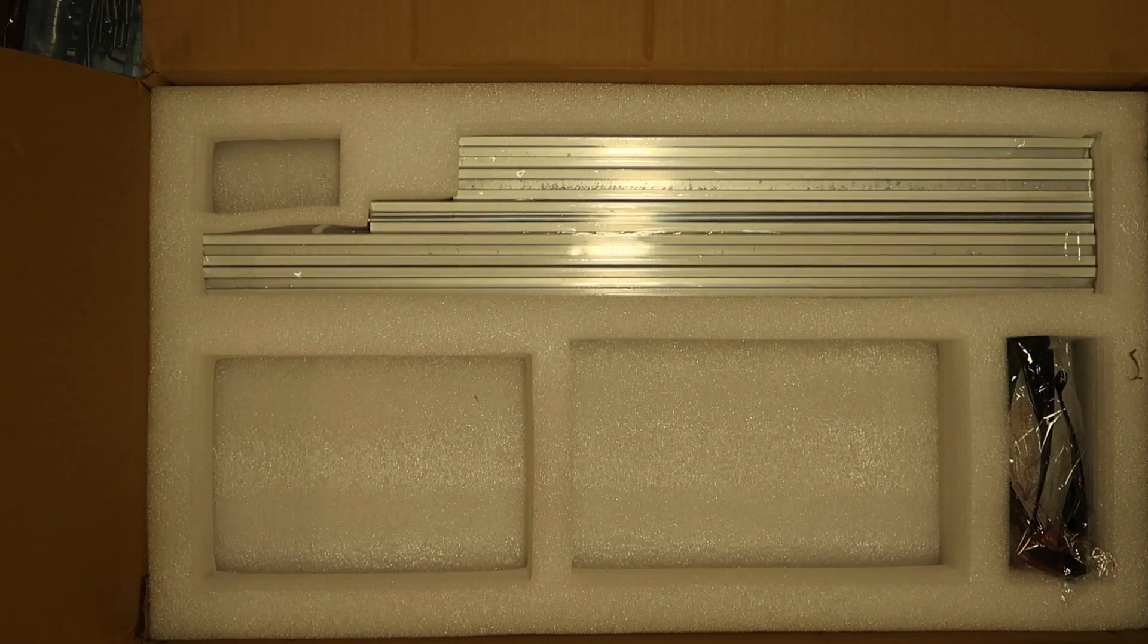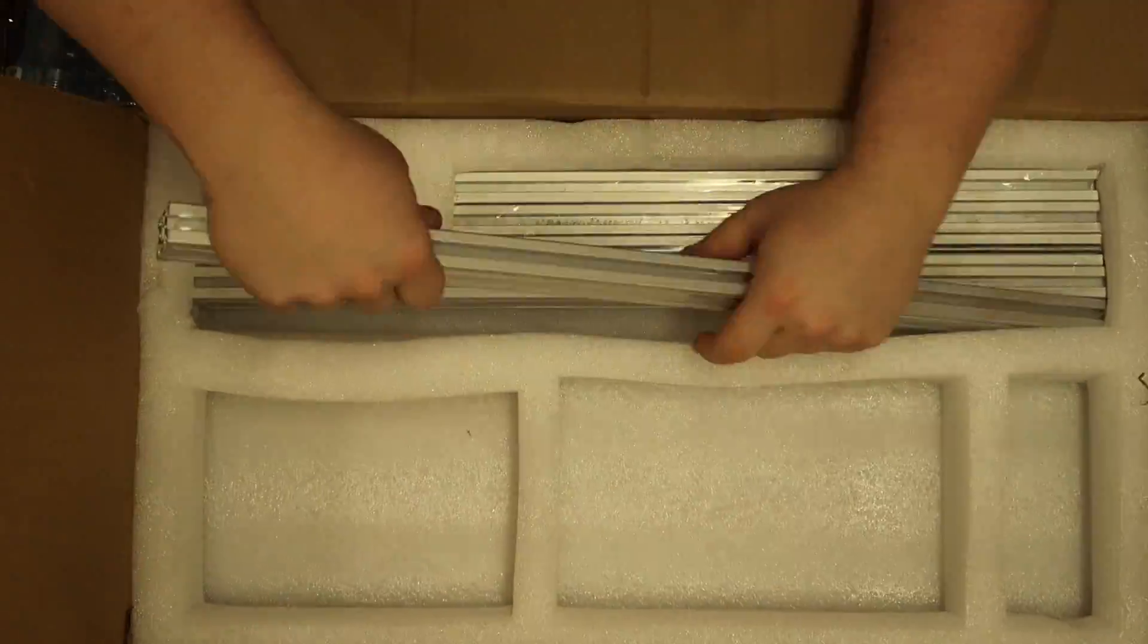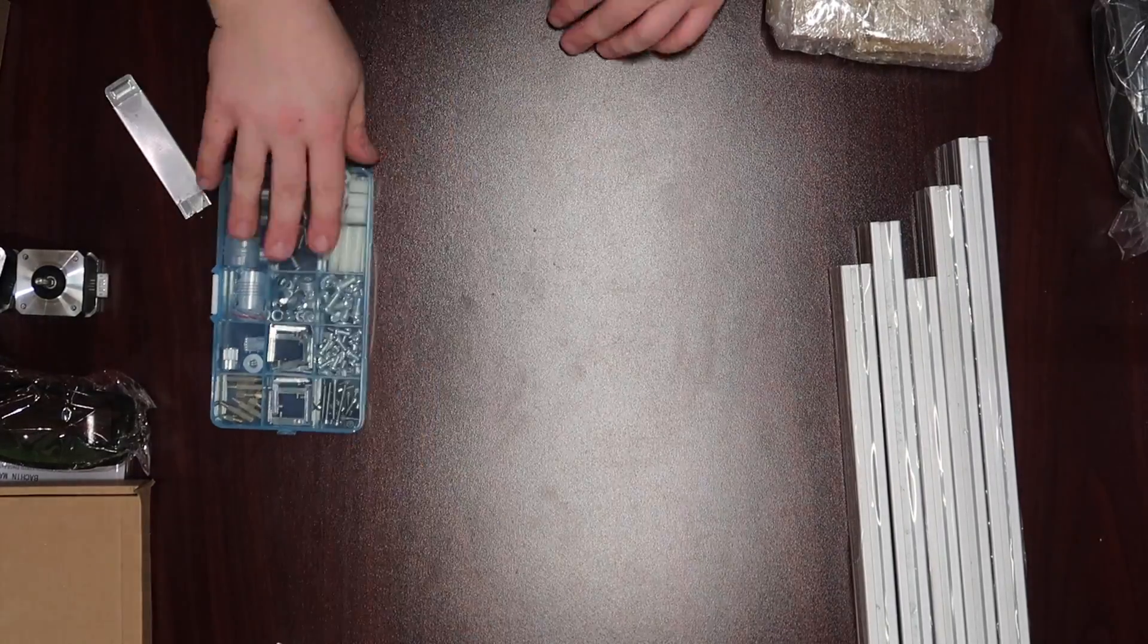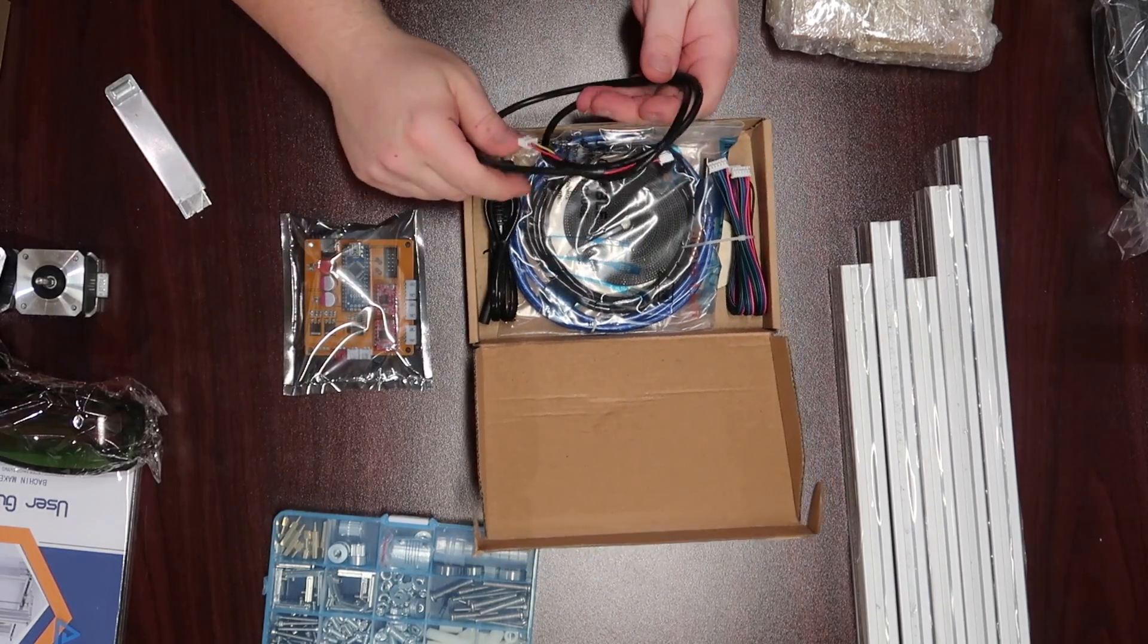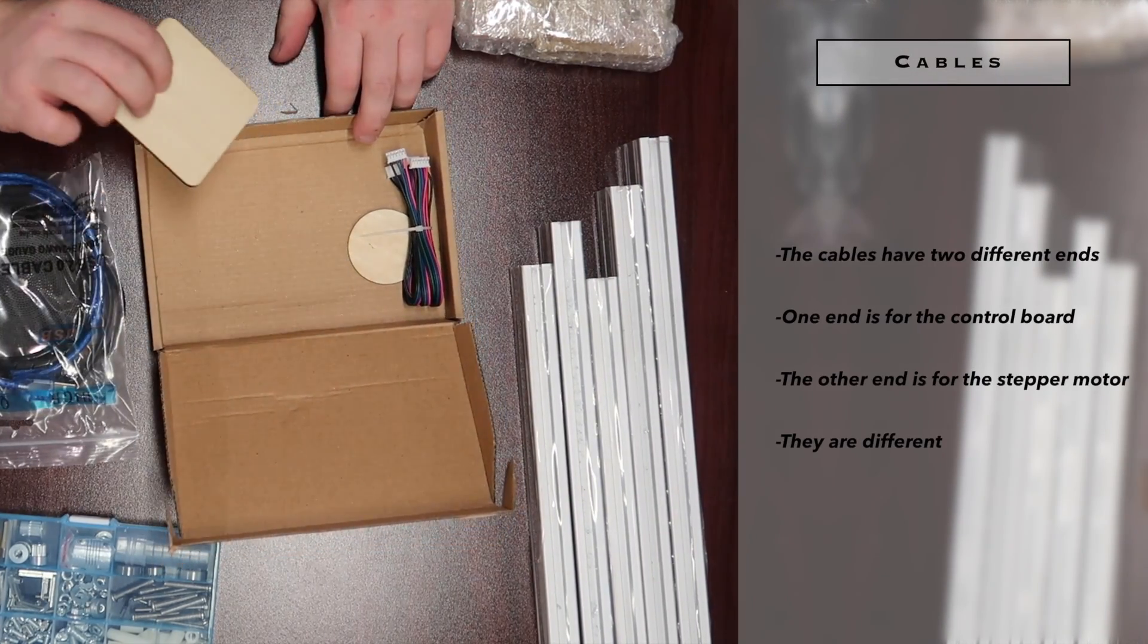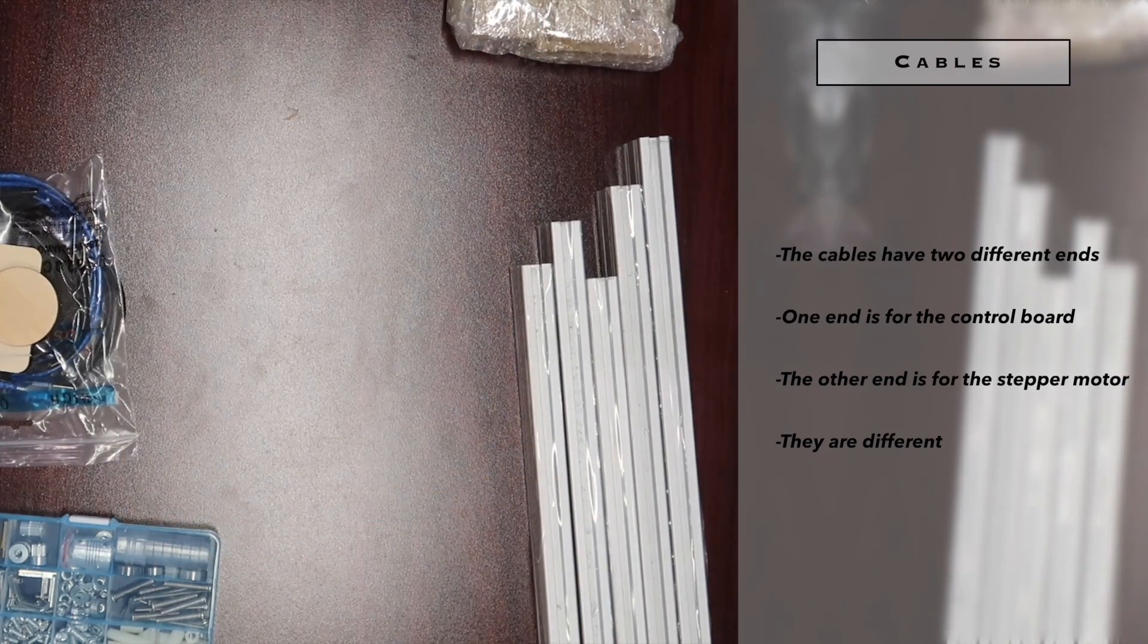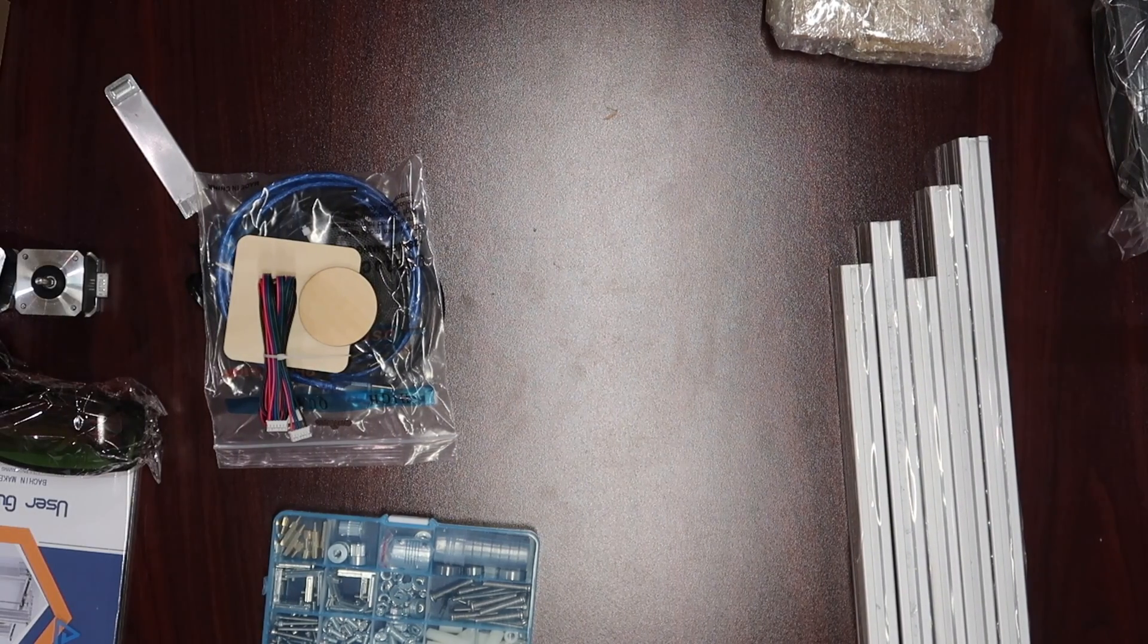One thing you'll notice about this machine is that it only has one stepper motor for the Y axis. It ends up using a jack shaft with a pulley on the other end to drive both sides. Here is the stepper board and the cables that go and plug into it. You're going to have two cables that are identical. Those are going to be the stepper motor cables. And then you're going to have a separate cable that's going to go from the board directly to the laser.